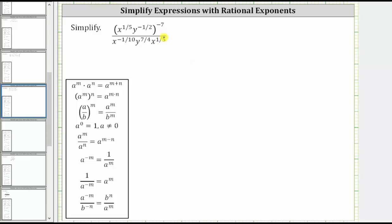We want to simplify the given expression. To simplify the expression, we simplify the numerator and denominator separately, then perform the division indicated by the fraction bar.